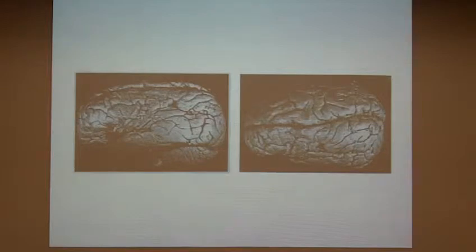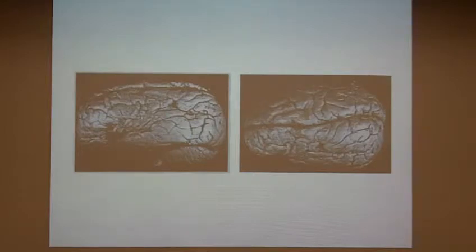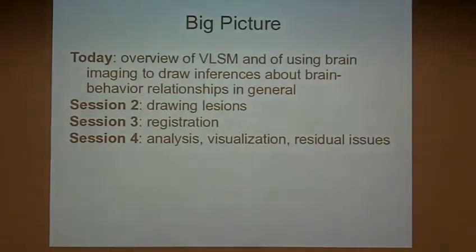This here is a brain. Some of you may recognize this as the brain of Paul Broca's patient, from whom we get Broca's aphasia and Broca's area. You can see that Broca's area by definition is missing in this brain, or really damaged. I wanted to put this up as an anchor for what we're going to be talking about — trying to understand the relationship between this and what that patient was actually able to do, and how that maps onto other patients. This is the big picture for these four sessions.